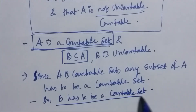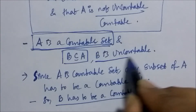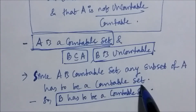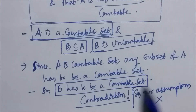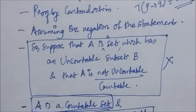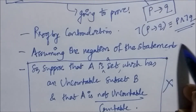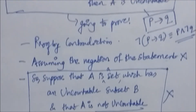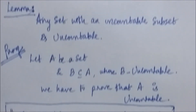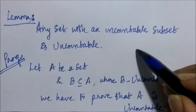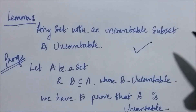We proved this statement in a previous video — the link will be in the description. Since A is a countable set and B is a subset of A, we get that B is a countable set. But B is also uncountable, and these two together form a contradiction. So our assumption was wrong — the negation of the statement is false. Therefore, if a set A has an uncountable subset B then A is uncountable is a true statement. Using universal generalization, we conclude that any set with an uncountable subset is an uncountable set.